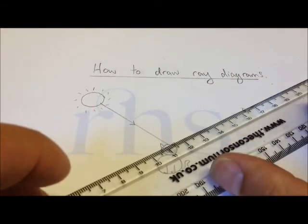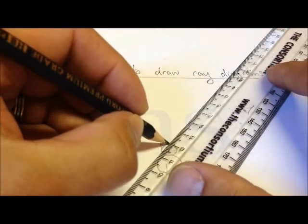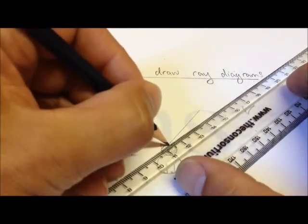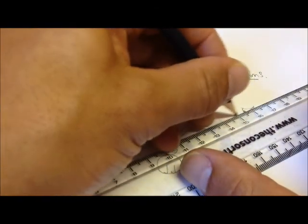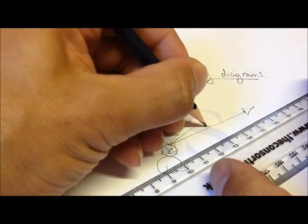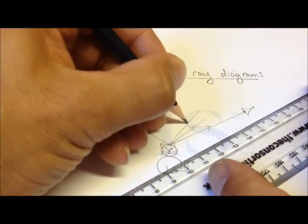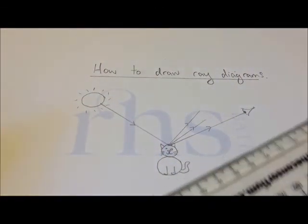The light then scatters from the object. Some goes in some directions, and some in another, and one particular direction will go into the eye. So that's the key one that we must draw on, again with a straight ruler, and again drawing arrows to indicate the direction of the light.